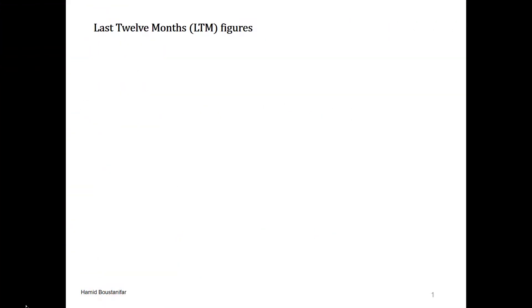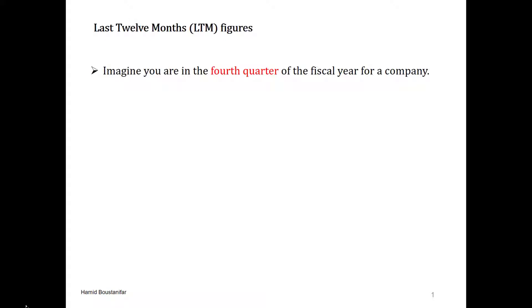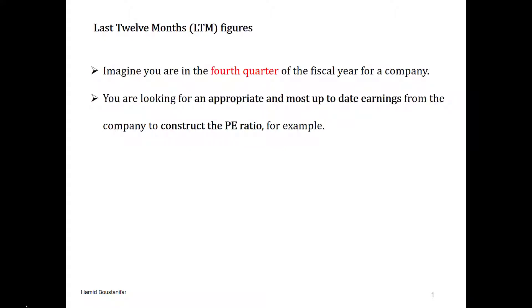Now let's get started. Assume a company whose fiscal year ends on December 31st and now we are in November, in the middle of the fourth quarter. You're trying to compute the PE ratio for this firm to be used in your multiple valuation. As a reminder, the PE ratio is computed by dividing the price per share by the earnings per share. The price is the current price that you can observe in the market.